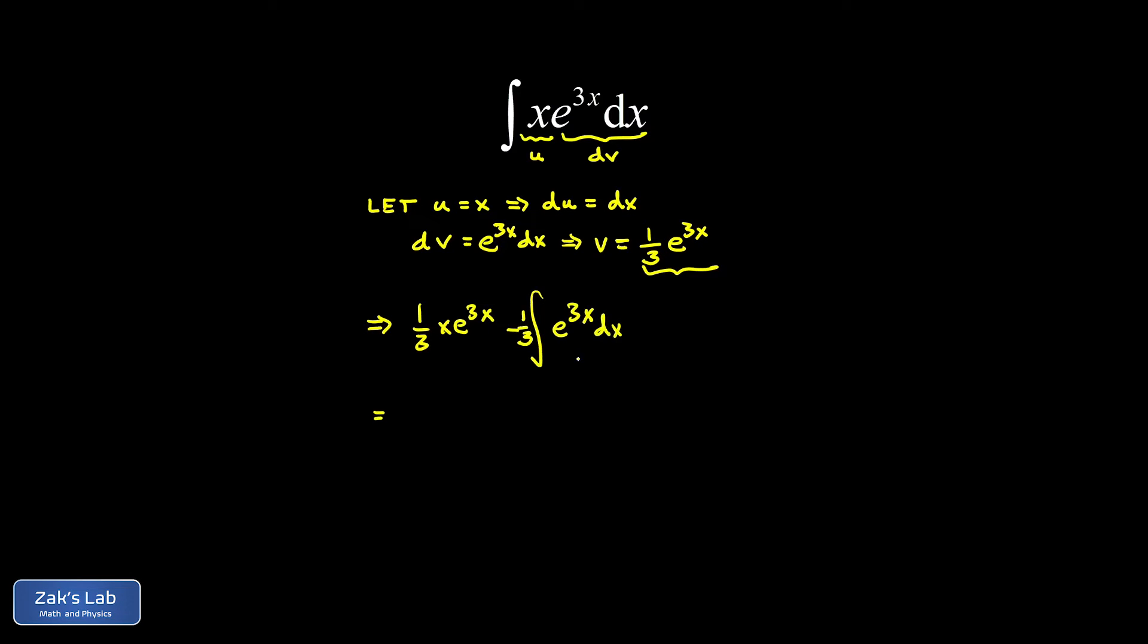So now we're computing the same antiderivative. When I take the antiderivative of e to the 3x, I get 1 third e to the 3x. It's just the chain rule backwards. That produces another factor of 1 third. So I end up with a negative 1 ninth e to the 3x for that second term.